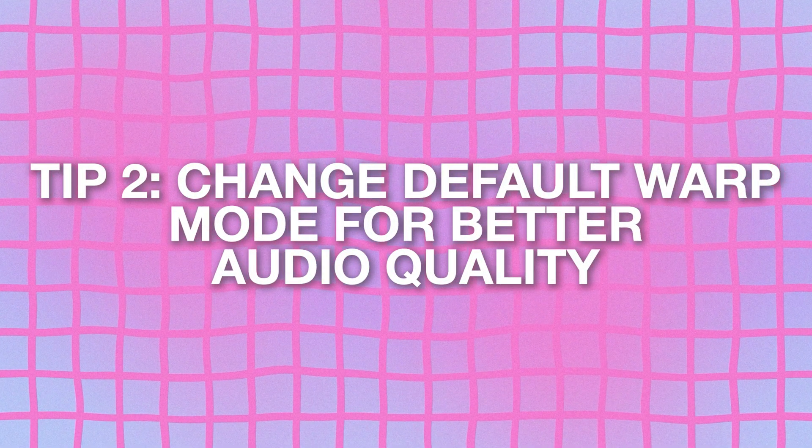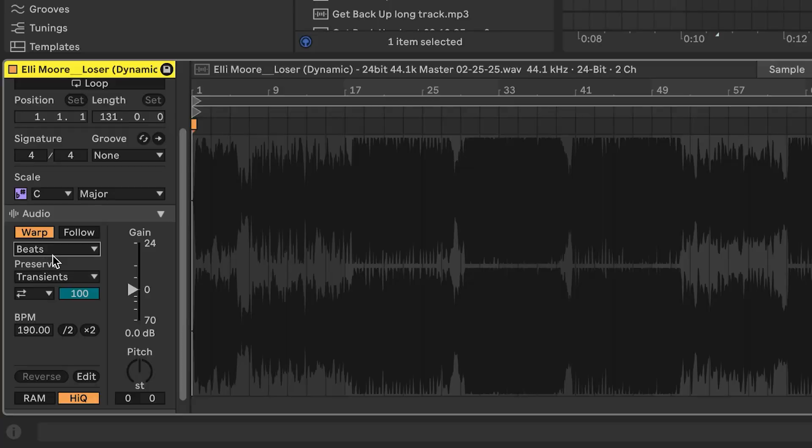My next tip is also about warping — changing the default warp mode. When I first started in Ableton, this drove me crazy for months. I would have random pops and clicks in my vocals, little artifacts, and I couldn't figure out what was happening. I had just sang the vocal and hadn't processed it in any way.